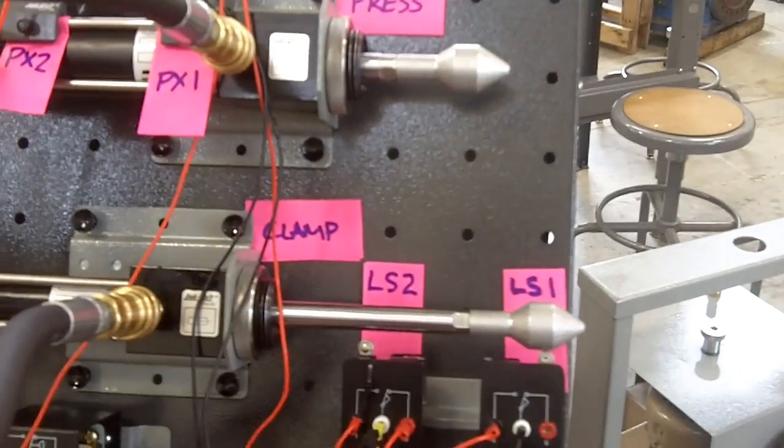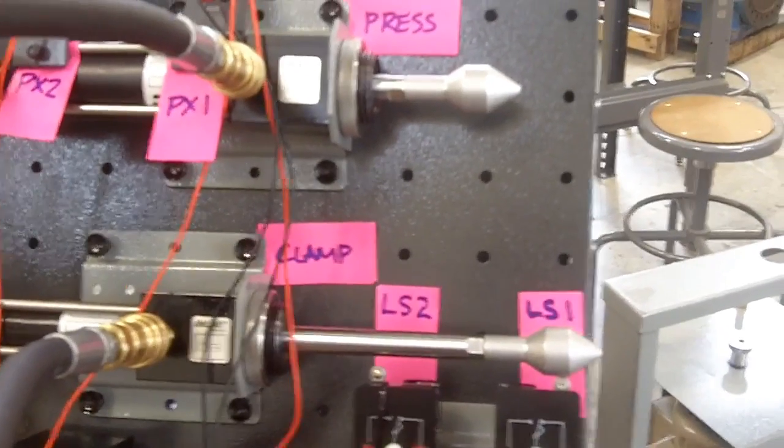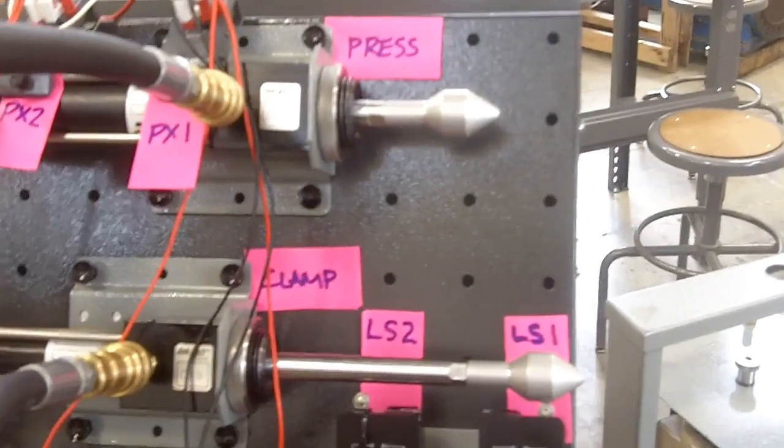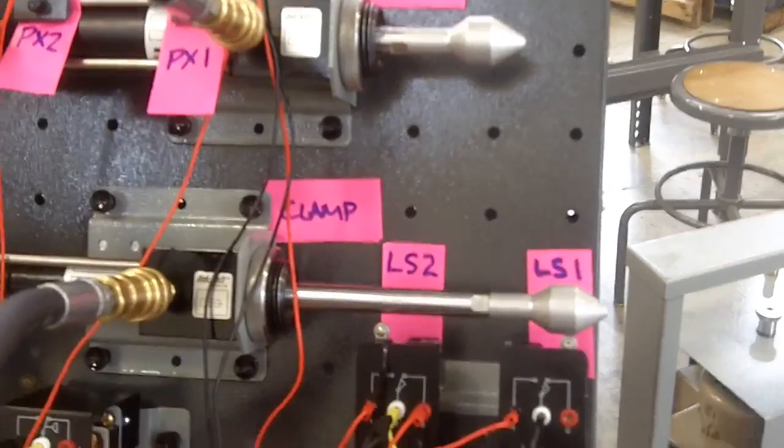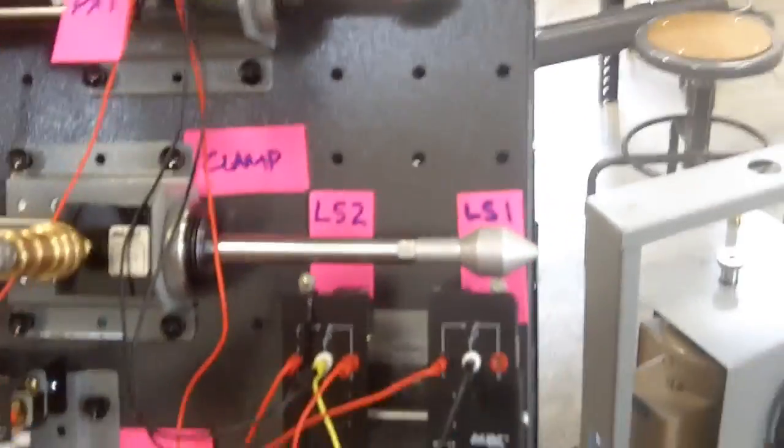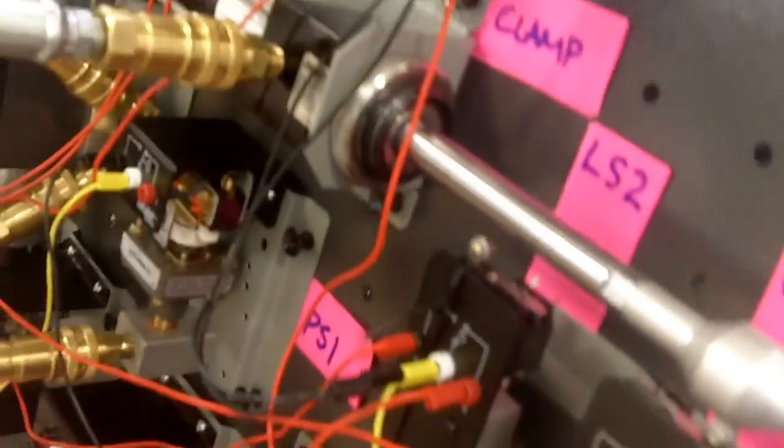So a different error this time. This time our clamp is extended all the way to limit switch 1, our presser has extended and retracted, however our clamp is still in the extended position.